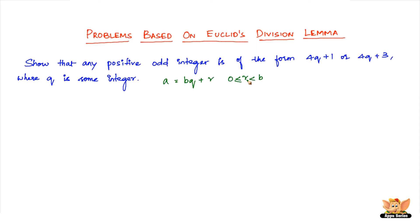R should be less than B because B is the divisor. Here A is the dividend, the number which is going to get divided. B is the divisor. Q stands for quotient and R stands for remainder.